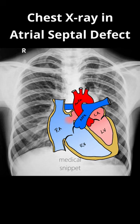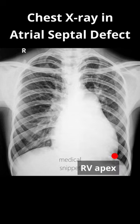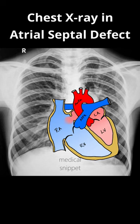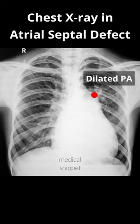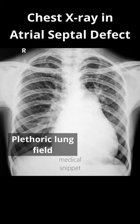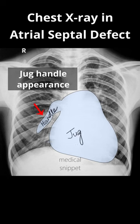The right ventricle forms the cardiac apex. From the right ventricle, the large volume of blood flows into the pulmonary artery, so the pulmonary artery also dilates with time. This increased blood flow then reaches the lung, which is seen as plethoric lung fields — the pulmonary vascular markings are seen till the periphery of the lungs.